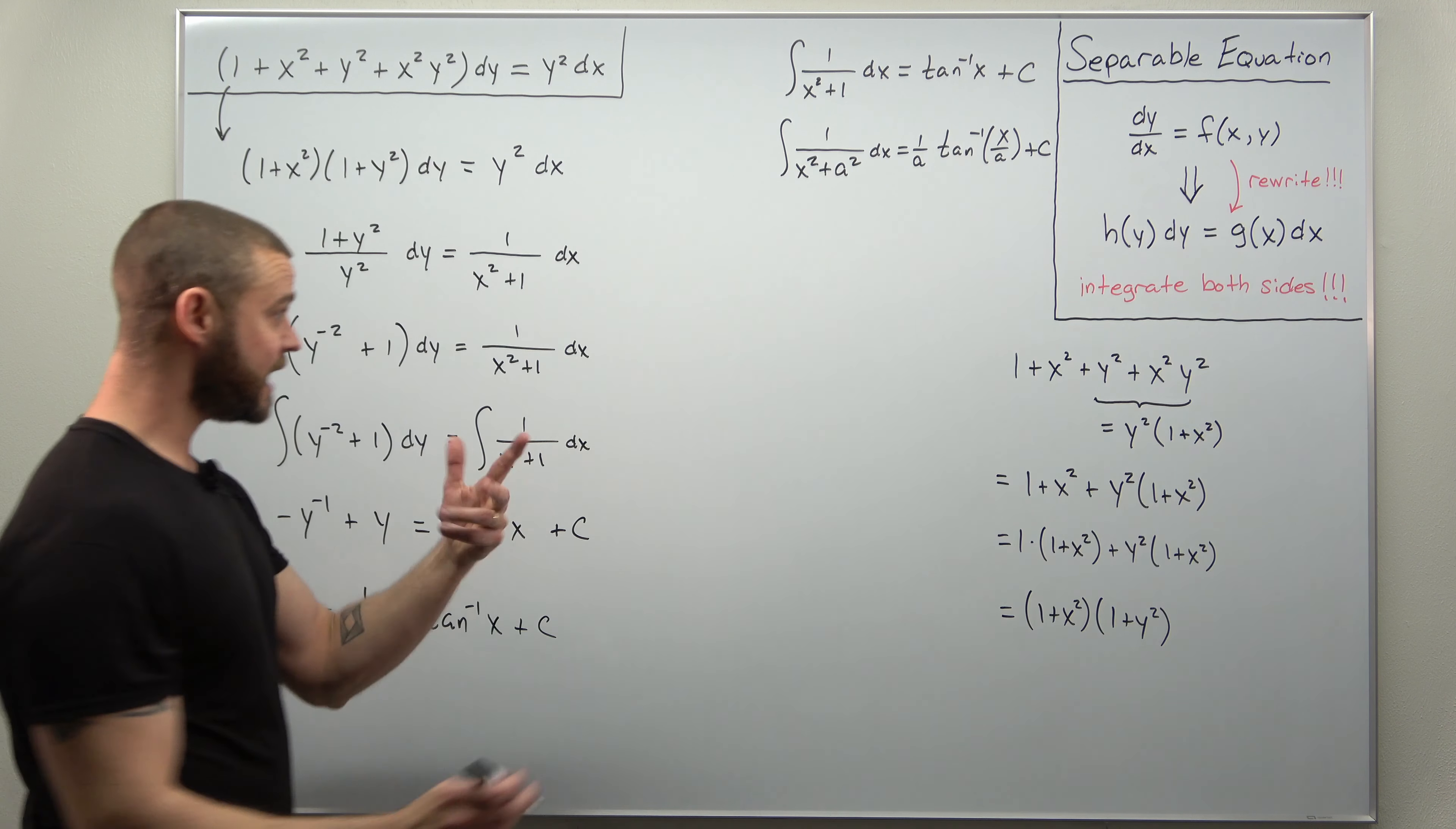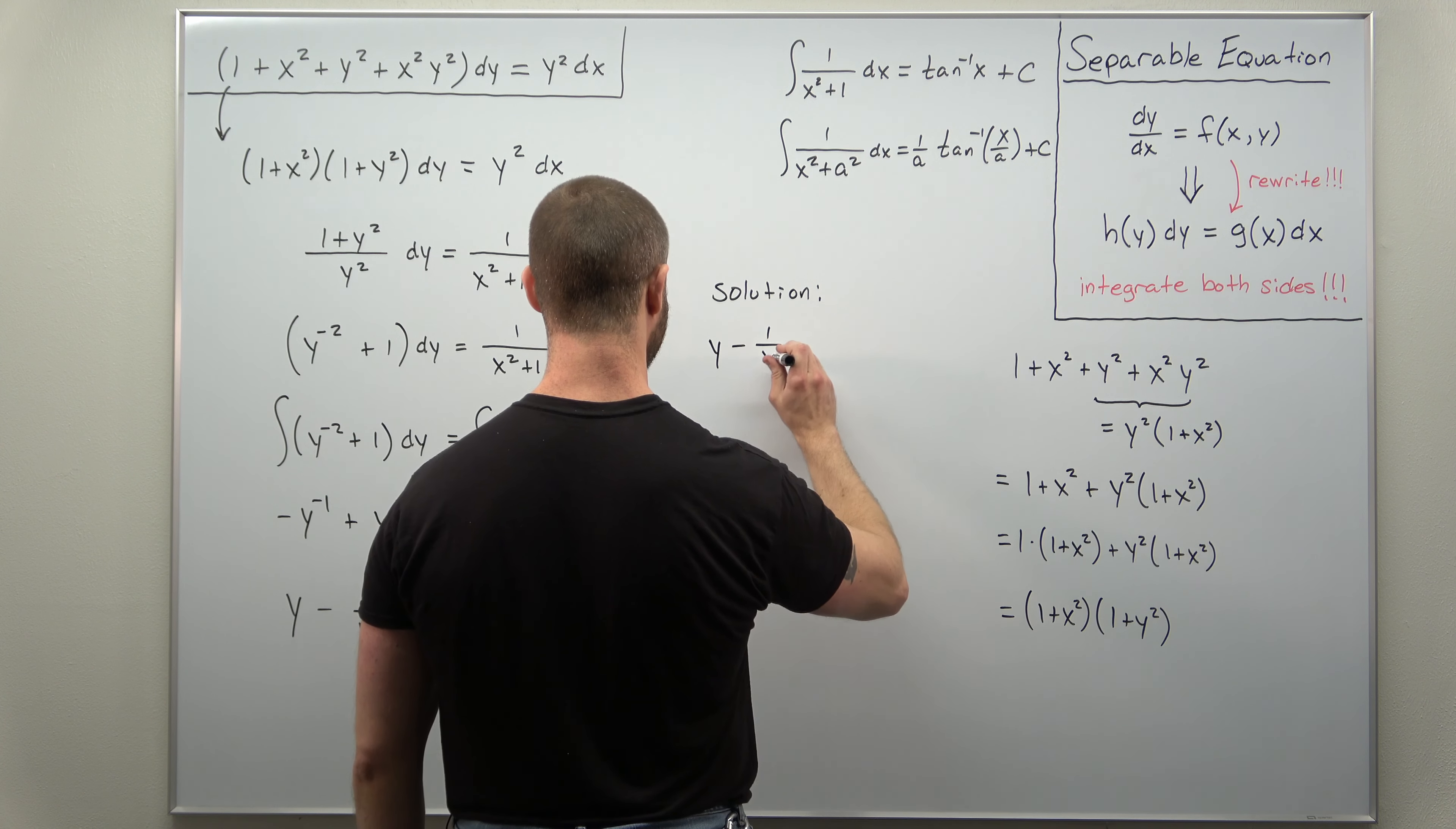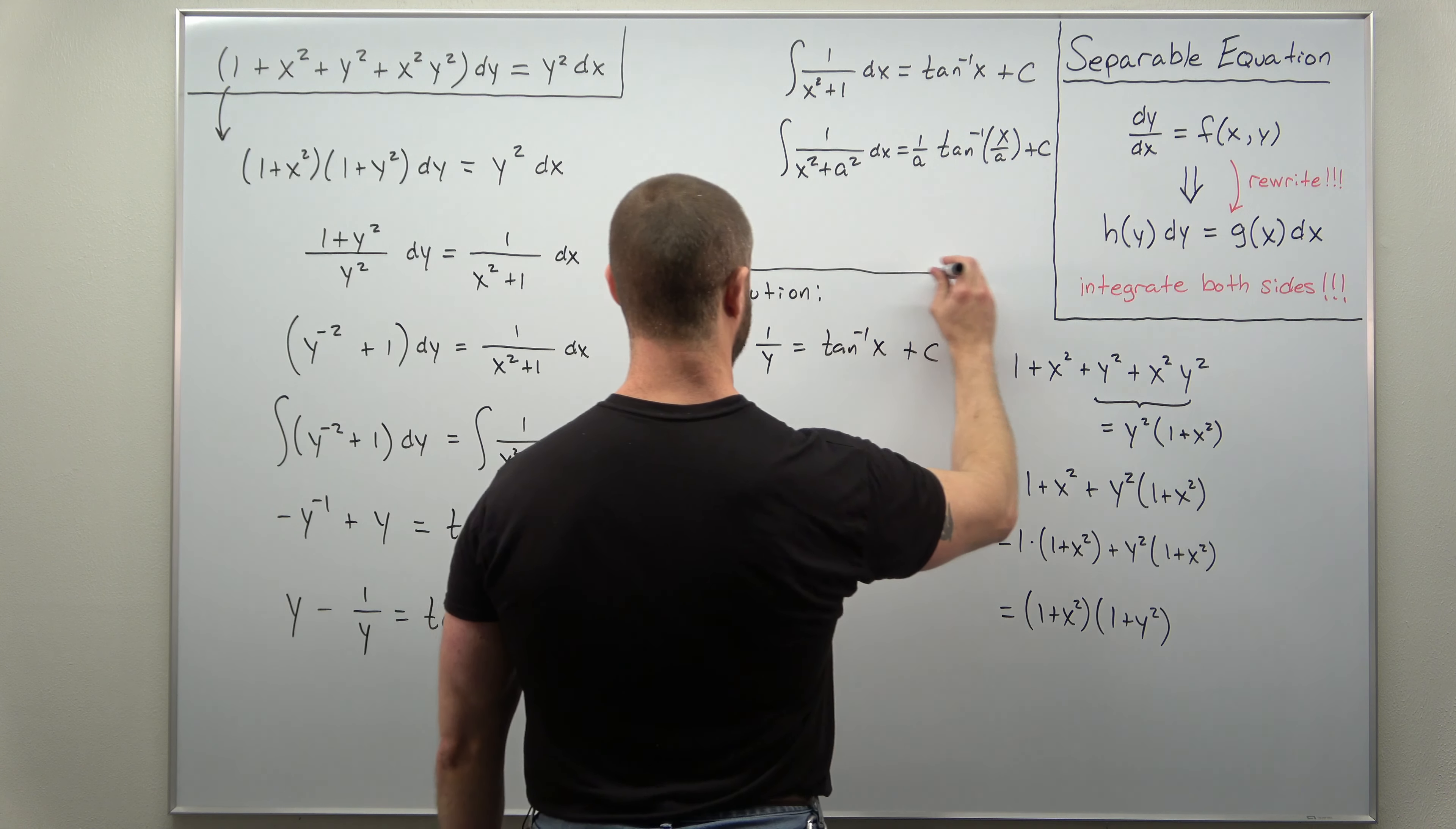And that's it. So let's just go ahead and state it clearly. The solution to our differential equation is y minus 1 over y equals inverse tangent of x plus c.